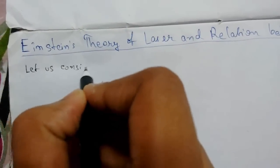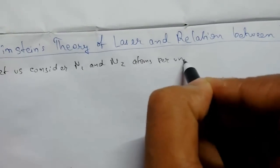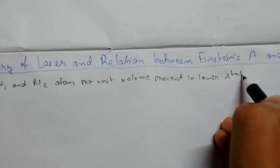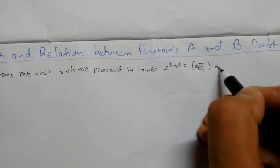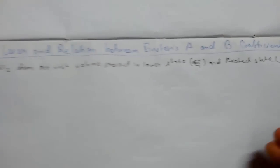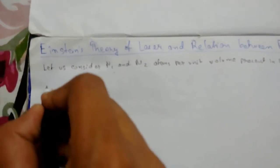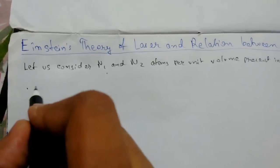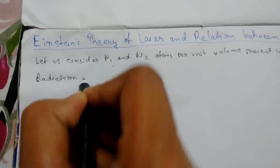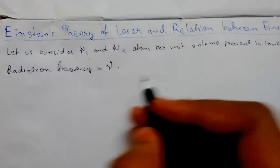Let us consider n1 and n2 to be the number of atoms per unit volume present in the lower state E1 and the higher excited state E2 respectively. An atom from the ground state is excited to E2 in the presence of radiation with frequency gamma.